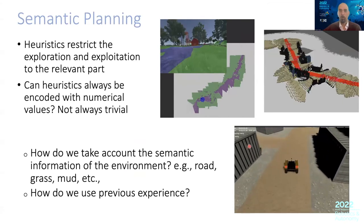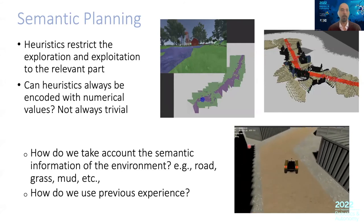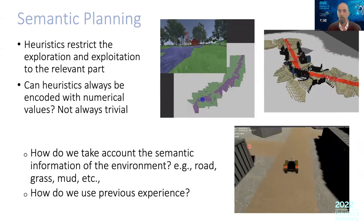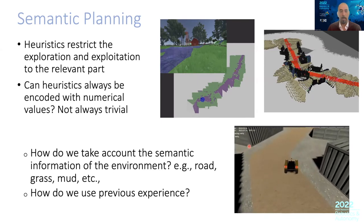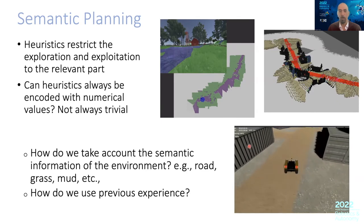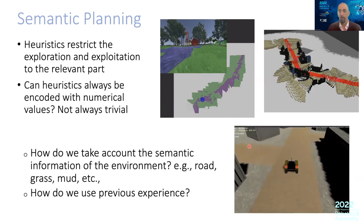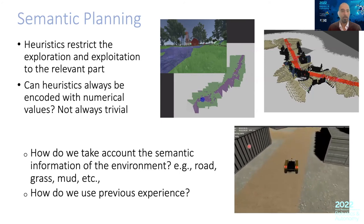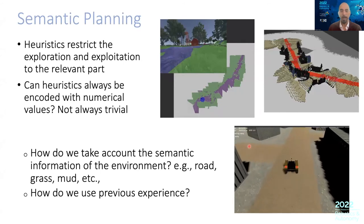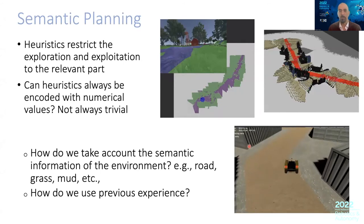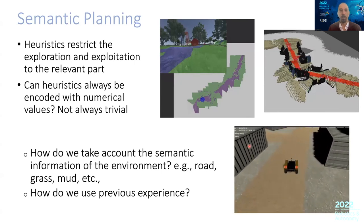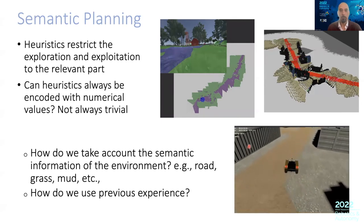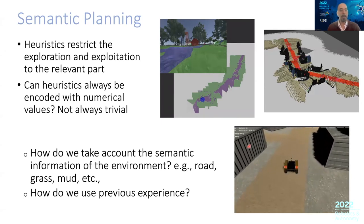What else can you do? We've been applying these algorithms to real problems. In real problems, you have more information than just the environment — you have actual information about the types of environments you encounter. In robotics, for example, you might want the robot to go from point A to point B but avoid going over particular types of surfaces, such as grass, mud, or gravel. Basically, we want to give semantic information to the environment and incorporate it into planning. This is a problem involving both geometric and semantic information. Semantic planning has become popular these days.